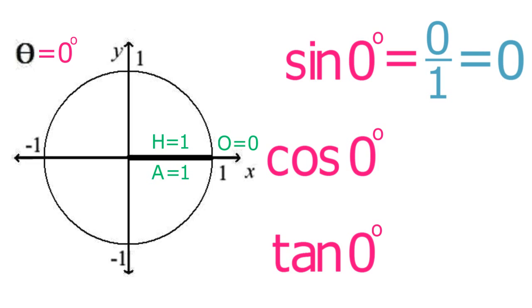The cosine of 0 degrees equals adjacent over hypotenuse, which is 1 over 1, so this value equals 1. And the tangent of 0 degrees equals 0 over 1, which equals 0.